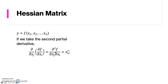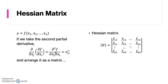If we arrange the results of this second partial derivative as a matrix, we will have the Hessian matrix. The first row is the result of the first derivative with respect to x1, and the second derivative with respect to the other variables in the function. The second row is the result of the first derivative with respect to x2, and the second derivative with respect to other variables, and so on for all independent variables.